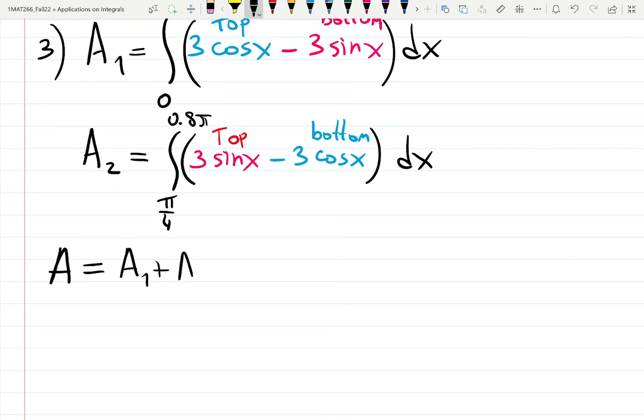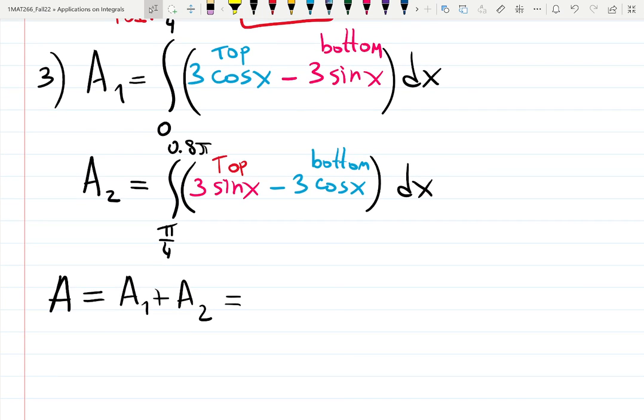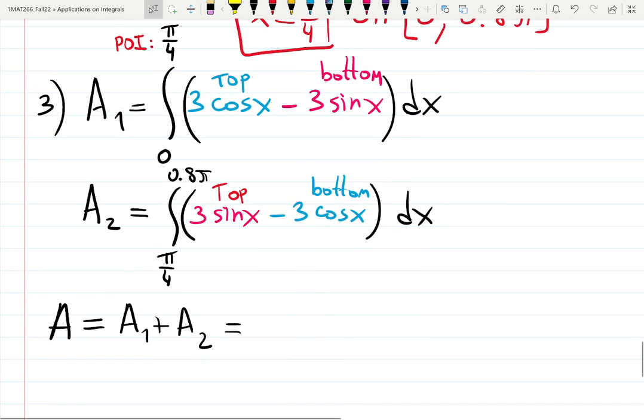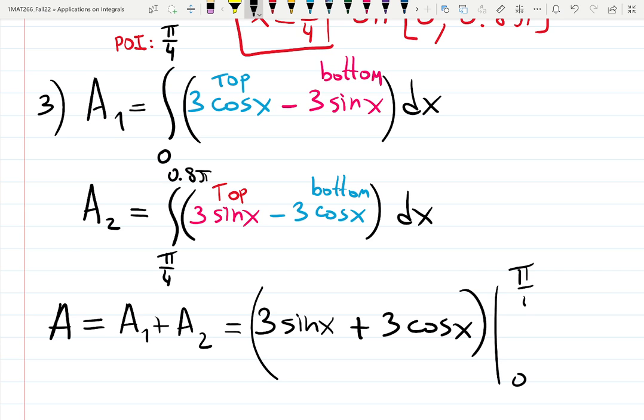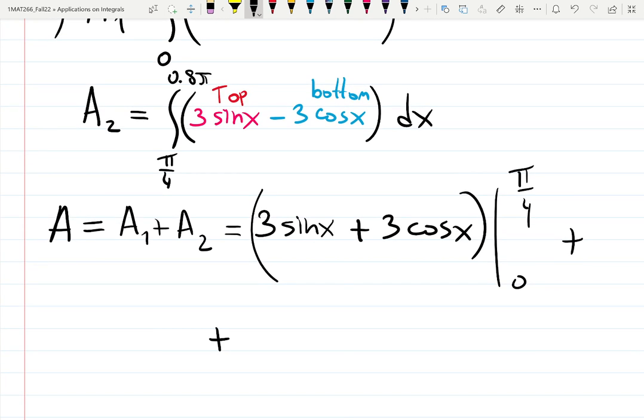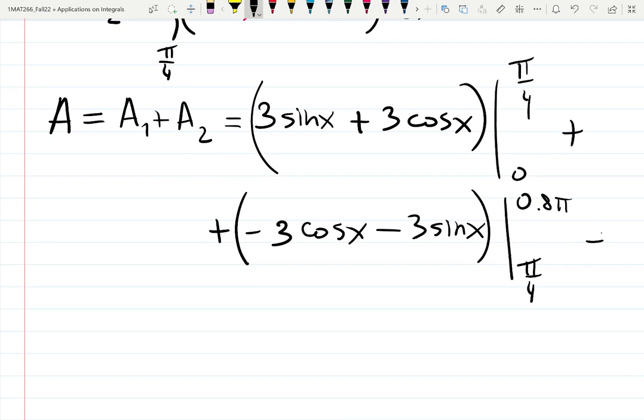Now we can add those together and get the answer. A is A1 plus A2. I'm integrating. You cannot merge those two integrals. Actually, you could probably. But let's integrate separately just to keep it well. You integrate 3 cosine becomes 3 sine x minus 3 sine gives you plus 3 cosine. So minus minus gives you plus. Plug 0 and pi over 4 for the first one. Integrate the second one. 3 sine gives you minus 3 cosine x. 3 cosine gives you plus sine x. Be careful with signs. Pi over 4, 0.8 pi.